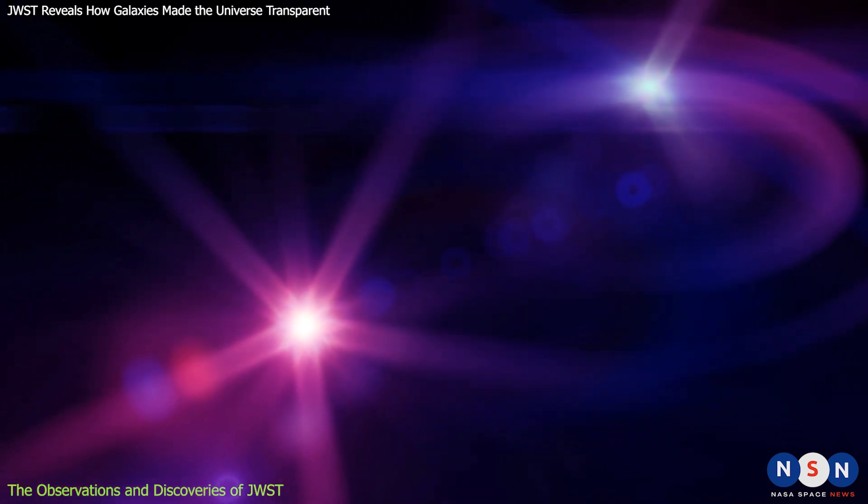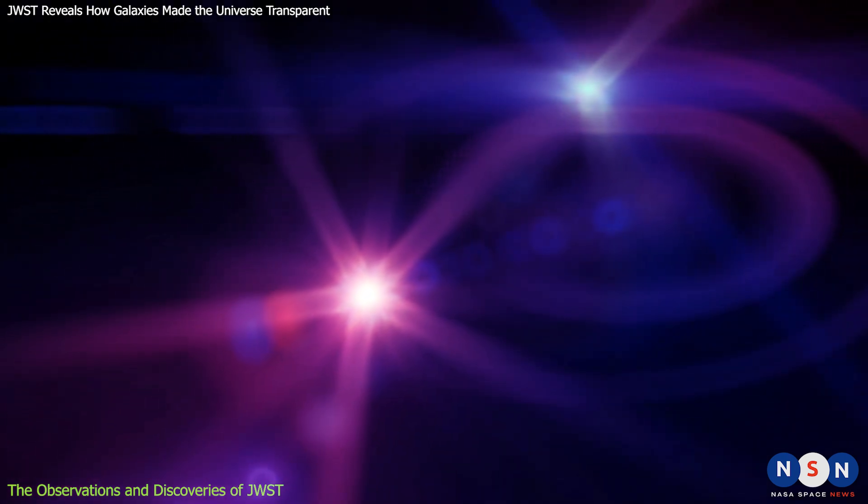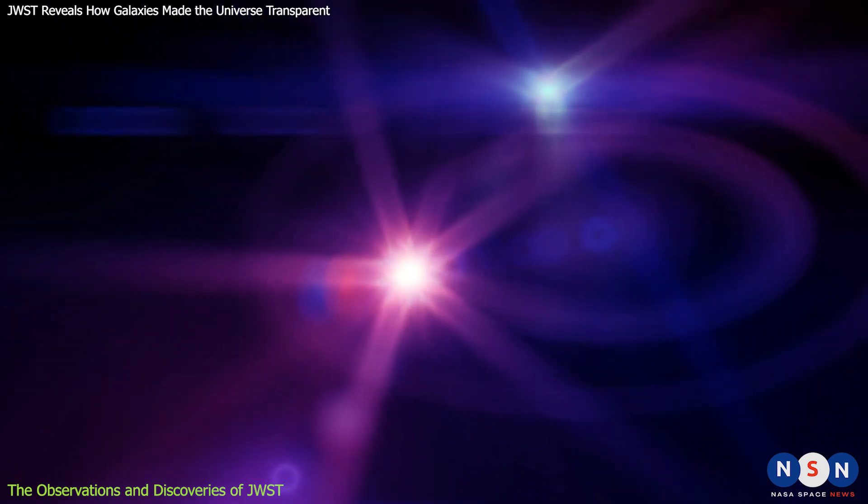One such type of light is called Lyman alpha emission. This is a specific wavelength of ultraviolet light that is emitted by hydrogen atoms when they recombine with electrons after being ionized.